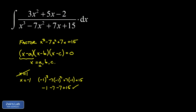We've established that x equals negative one is a root of this cubic polynomial, which means x plus one is a factor. Another way of saying that is x plus one divides this cubic polynomial evenly. So next we'll use polynomial long division to divide x plus one out, leaving us with a quadratic we can factor further.